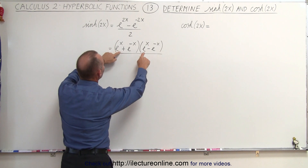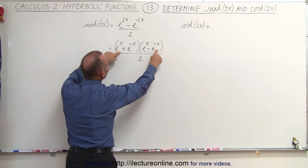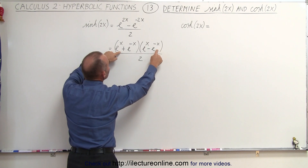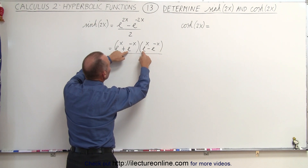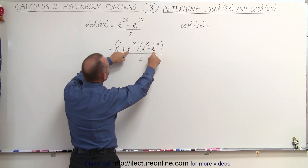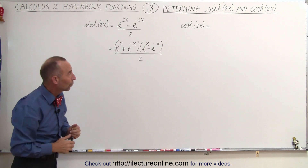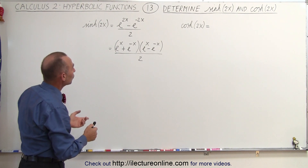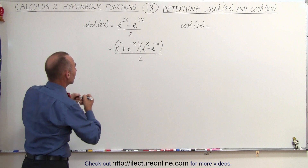So e to the x times e to the x is e to the 2x. e to the x times minus e to the minus x gives minus e to the 0. And e to the minus x times e to the x gives plus e to the 0. Those middle terms cancel out, and the remaining terms multiplied together give us e to the minus 2x. So it is indeed correct. Now what we're going to do is multiply and divide the numerator by 2.